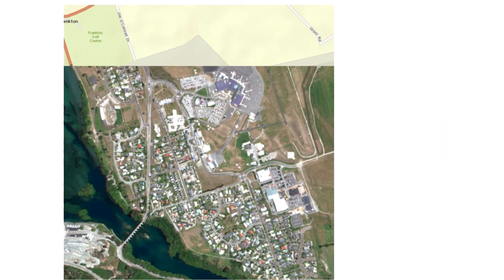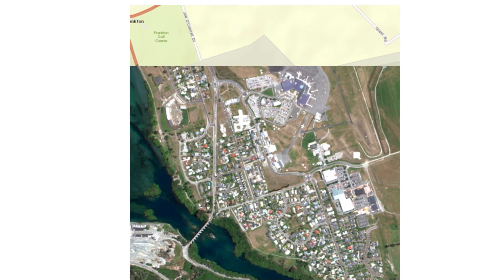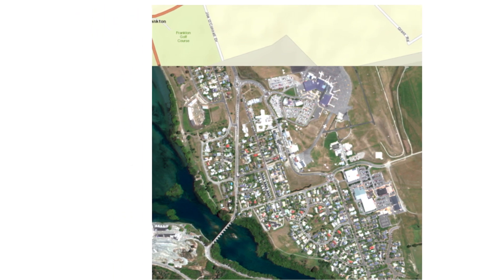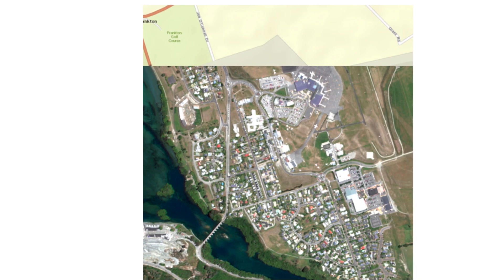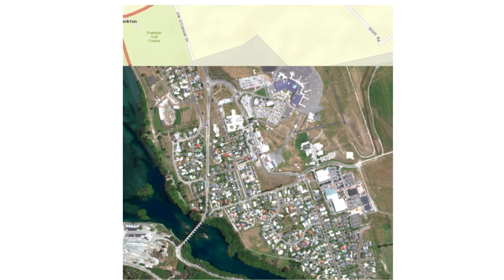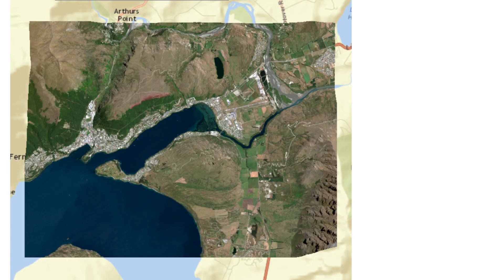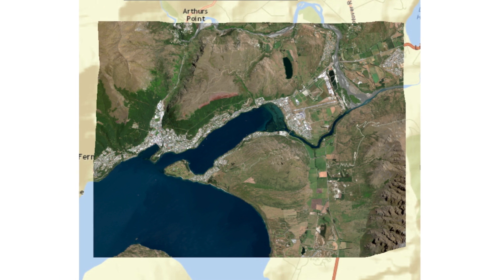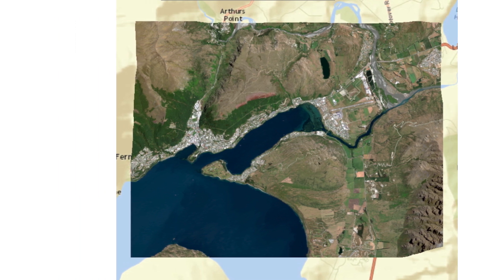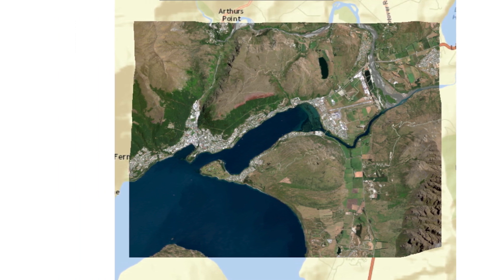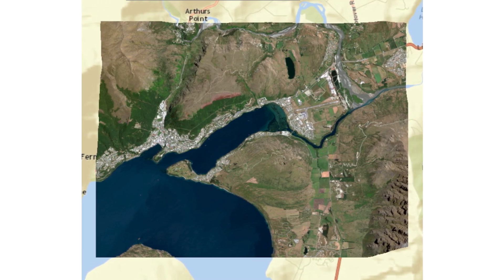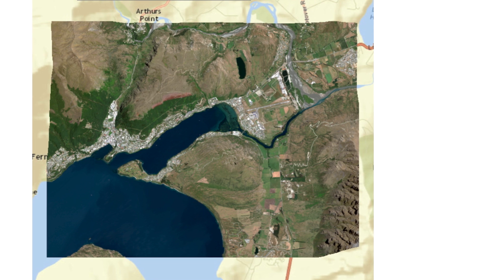What can you do with an orthorectified image? Orthoimagery is an essential element for many geospatial information applications. With GIS data layers, orthoimagery can form rich geospatial data visualizations for cadastral mapping, urban planning, civil engineering, topographic mapping, site evaluations, transportation analysis, and natural resource management.